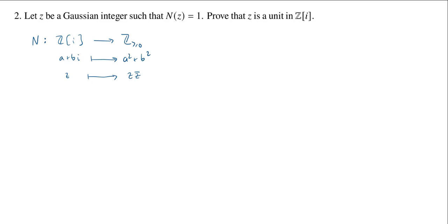Let's start with this first one. If I assume that z is of the form a plus bi, then we know N(z) equals 1. And that's going to imply that a squared plus b squared equals 1, where a and b are integers.